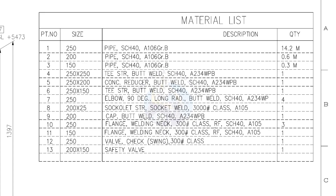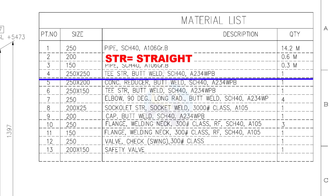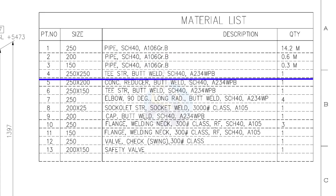Part numbers 1 to 3: all these pipes are Schedule 40. Item number 4: 250 into 250 straight T, butt welded, Schedule 40. The quantity is 1.